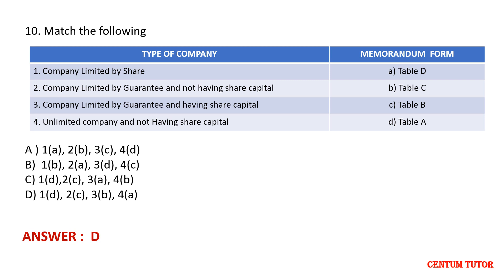Company limited by share uses Table A. Company limited by guarantee and not having share capital uses Table B. Company limited by guarantee and having share capital uses Table C. Unlimited company and not having share capital uses Table D. These tables in the Memorandum and Article of Association correspond to different types of companies. Thank you for watching this video — wish you all the best!